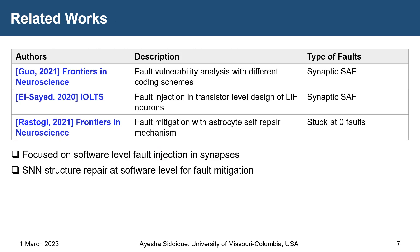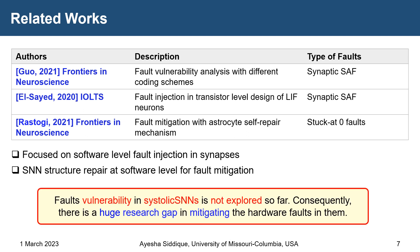Some state-of-the-art works have investigated the fault vulnerability of spiking neural networks, but at the software level. For example: fault vulnerability analysis with different coding schemes for synaptic stuck-at faults; fault injection at the transistor level of LIF neurons; and fault mitigation with a stochastic self-repair mechanism by changing the SNN structure. However, fault vulnerability in systolic SNNs has not been explored so far, and there is a huge research gap in mitigating hardware faults in them.